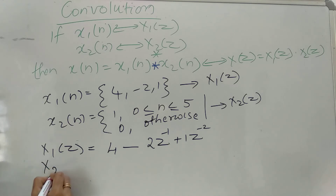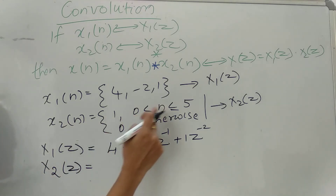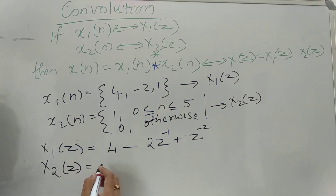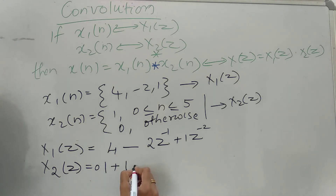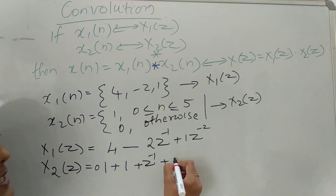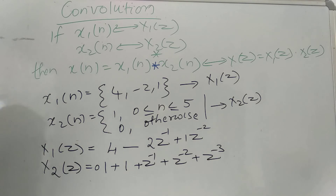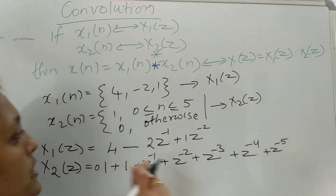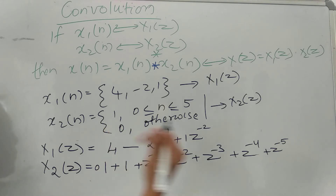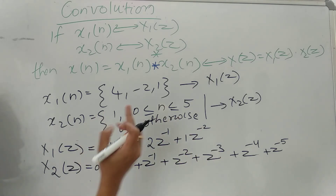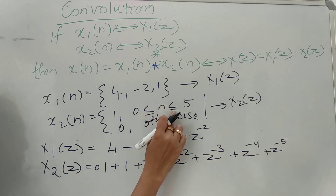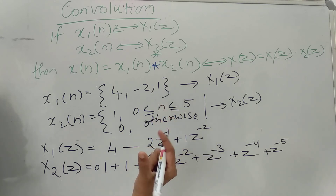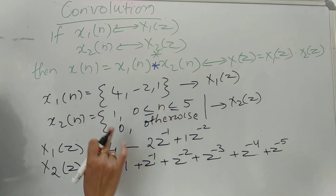Now X2 of Z: for values from 0 to 5, the signal value is 1. So we get 1 into Z raised to 0, plus 1 into Z raised to minus 1, and it continues for the 3rd, 4th values. For indices 0, 1, 2, 3, 4, 5 — these 6 samples all have value 1.